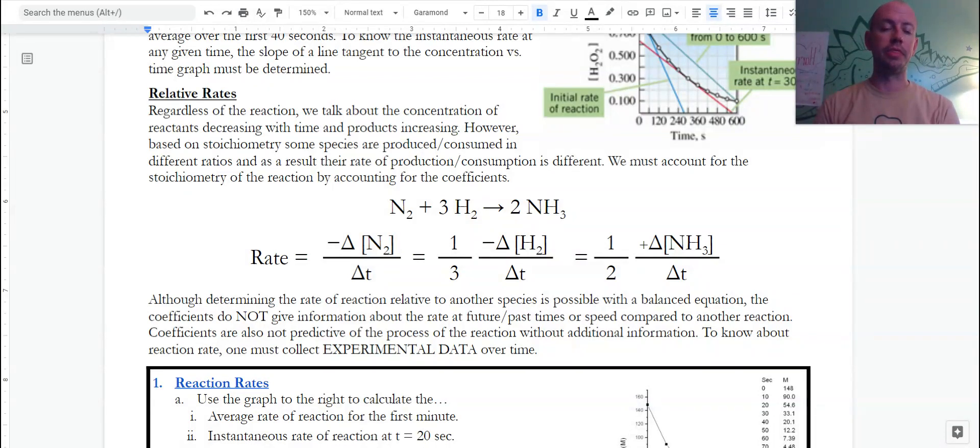So to get to the same equal value for a rate, I would multiply that change by one third. To get to the same thing for ammonia, we would recognize, yes, it is positive because we're creating it, but for every mole of nitrogen that goes away, I'm able to make two moles of this. It is created twice as fast.